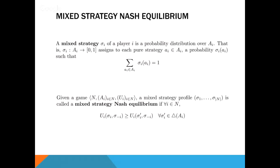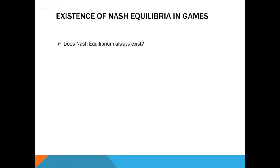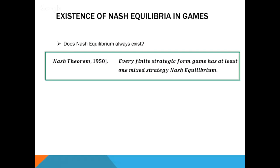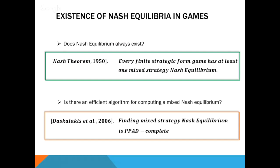More formally, a mixed strategy σ_i of a player is a probability distribution over all actions, assigning to each pure strategy a probability such that the summation equals 1. A mixed strategy profile is called a mixed strategy Nash Equilibrium if the utility with this strategy profile is always at least as good for all agents. By Nash's Theorem, every finite strategic form game has at least one mixed strategy Nash Equilibrium. Furthermore, finding a mixed strategy Nash Equilibrium is PPAD-complete, as shown by Daskalakis et al.